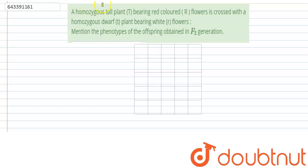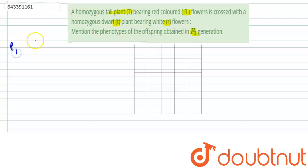Hello everyone. The question here is: a homozygous tall plant bearing red color flowers is crossed with a homozygous dwarf plant bearing white flowers. Mention the phenotypes of the offspring obtained in the F1 generation. In the parental generation, two pairs of contrasting characters are taken.